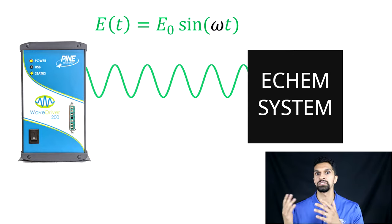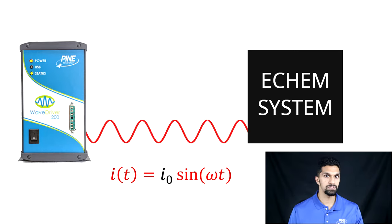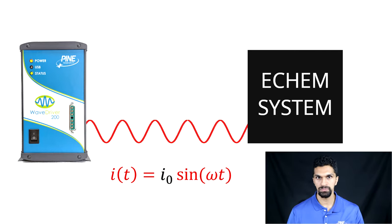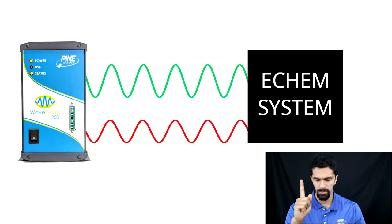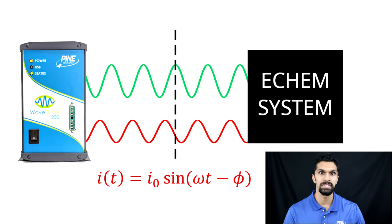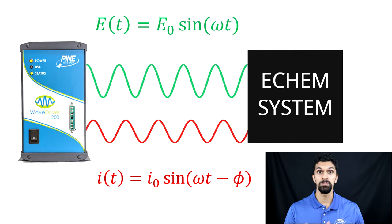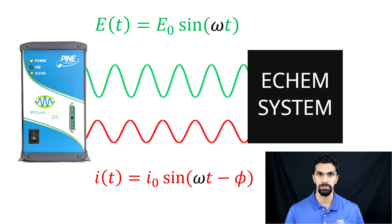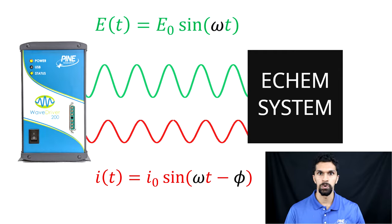The corresponding output current has the same attributes. It is a time-dependent current, it has an amplitude, and it also has the same angular frequency as the input sinusoidal potential. However, the output sinusoidal current may be offset from the input sinusoidal potential. This offset is known as a phase shift or a phase angle. To reiterate, the input and output signals should have the same angular frequency, but the output signal may be offset by a phase shift or phase angle.